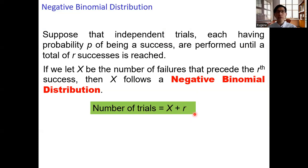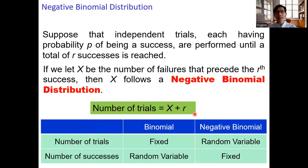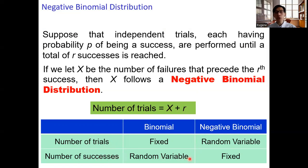Let's take a look at the differences between the binomial distribution and the negative binomial distribution. Regarding the number of trials: for the binomial distribution, we fix it in advance; for the negative binomial, it is a random variable. For the number of successes in the sample: this is a random variable for the binomial distribution, and for the negative binomial distribution, we fix this value in advance.